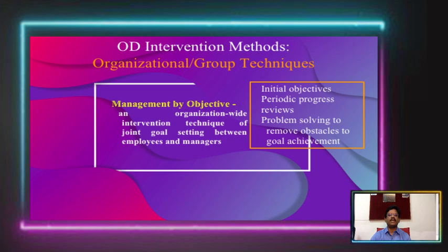The first technique at the organizational or group level is Management by Objectives. Management by Objectives is an organization-wide intervention technique of joint goal setting between employees and managers. It is related to fixing the goals and objectives of the organization in consultation with the employees who are going to work and accomplish those goals. With collaborative discussion and approval of all employees, the management objectives are fixed.